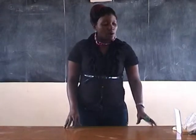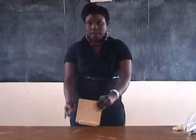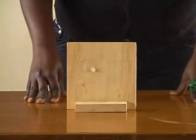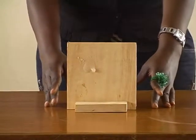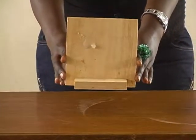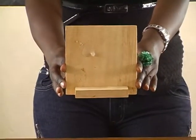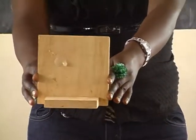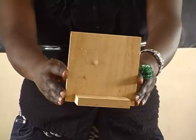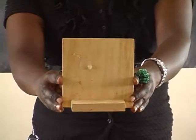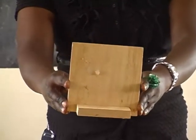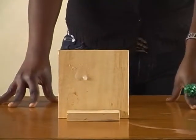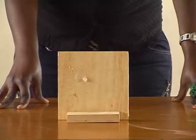I'll start with my first material, which is a piece of wood. The first thing we are going to do is to look through it. When we look through this piece of wood, can anyone see through it? When I look through this piece of wood, I can't see through it — one cannot see through it.